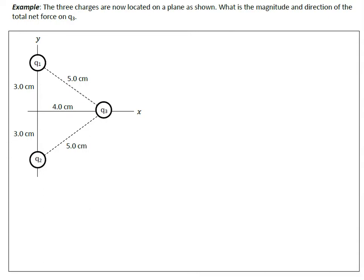For this question we have the same three charges but now they're in a different orientation. Q3 is still 5 nanocoulombs, Q1 is 1 nanocoulomb, and Q2 is negative 3 nanocoulombs. We're trying to find out what is going to happen to Q3 again.